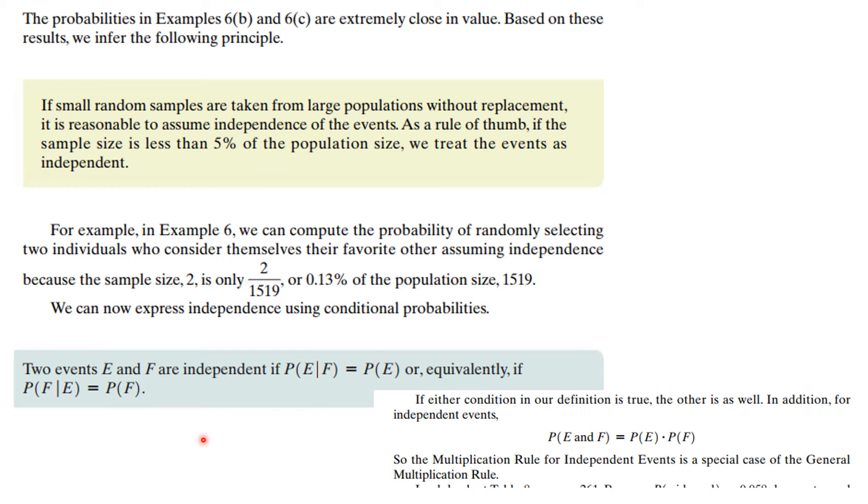And now, one thing that we can do is come up with an additional characterization of two events being independent. And in fact, you might say, well, I thought this is what it meant all along. Two events, E and F, are independent if the probability of E given F is equal to the probability of E. It didn't matter whether F happened or not. Or equivalently, if the probability of F given E is the probability of F. Now you see, this is true because if either condition and the definition is true, the other is as well. And for independent events, the probability of E and F is the probability of E times the probability of F. So you see, the multiplication rule for independent events ends up being a very special case of the general multiplication rule.